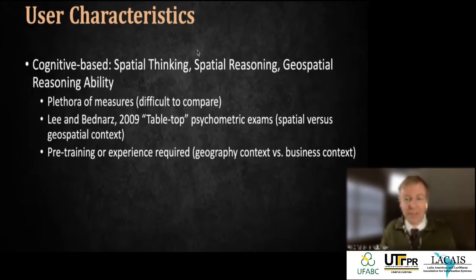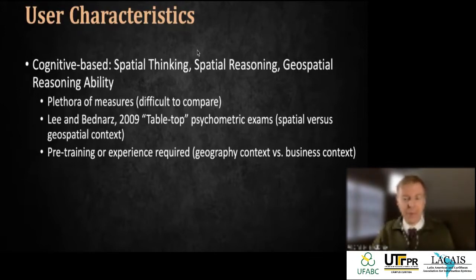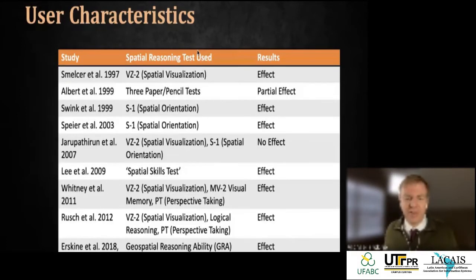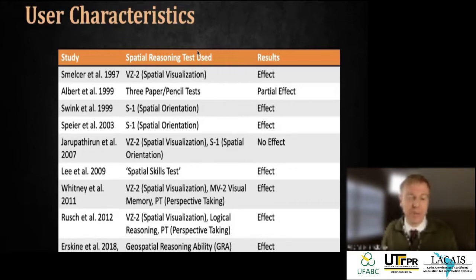Those problems require either a business context or geographic context to solve, otherwise it's just guessing. So I worked on developing the GRA scale — a geospatial reasoning ability scale with three dimensions at a geographic scale. These items can work with any kind of decision maker — whether they have experience with business data, wilderness navigation, or none at all. It's a general-purpose measure you can apply broadly.